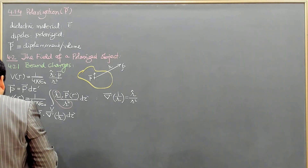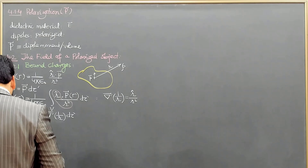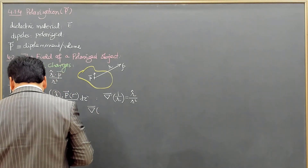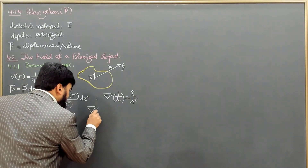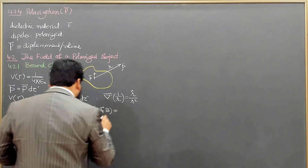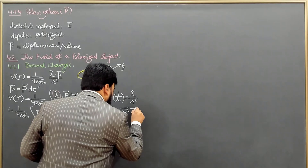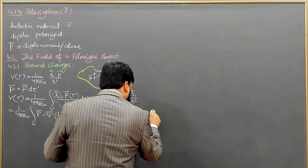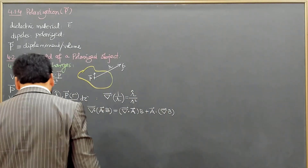Now we integrate by parts and utilize the vector identity: if we have the divergence of a scalar B times a vector A, this can be written as B times (del dot A) plus A dot (del B), the gradient of B. We will apply this identity to simplify the expression.